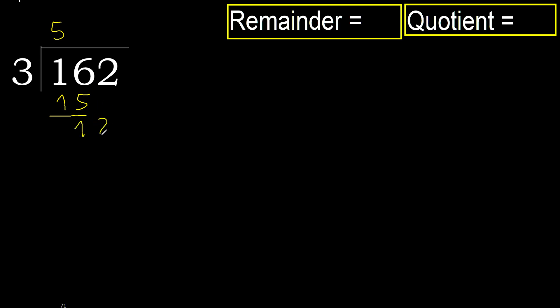Next, 12. 3 multiply by 5 is greater. Multiply by 4 is 12 — 12 is not greater. Subtract.